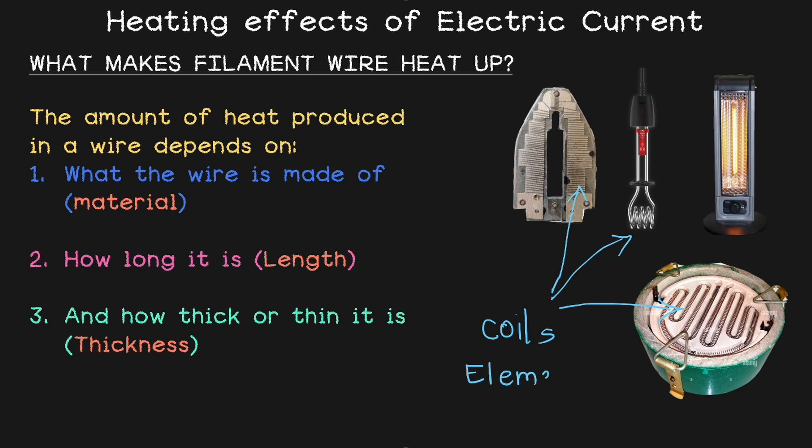Now these coils are also called elements. So if you want to try dismantling these devices, you can go to an electrician and ask for the elements of iron, elements of electric stove, or elements of electric geyser.